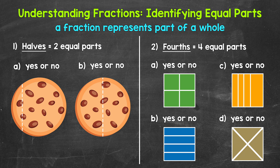Let's jump into our examples, starting with number one, and see what this means and looks like. For number one, we are looking at halves — that means we want two equal parts. Let's say we want to split a chocolate chip cookie in half. Let's look at cookie A. Do we have halves, so two equal parts? No, the right part is bigger than the left part. This would not be a fair split if we were sharing this cookie. This is not a representation of halves, two equal parts. So no, we do not have halves here.